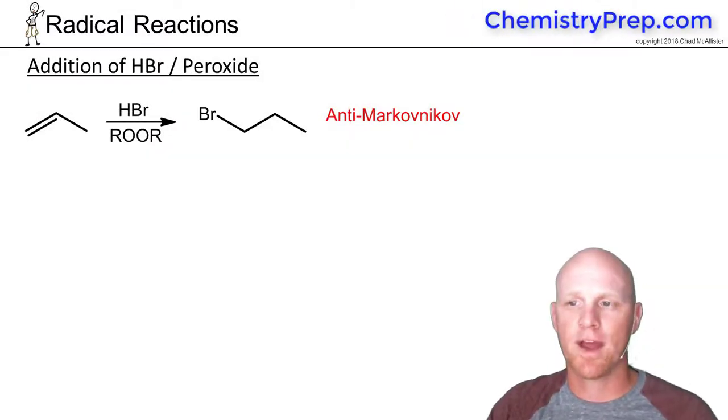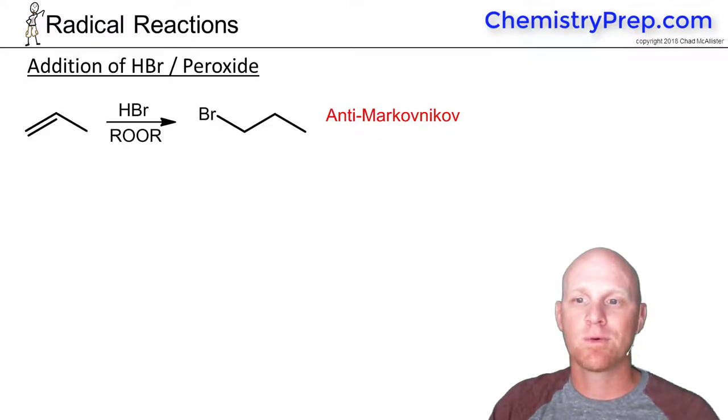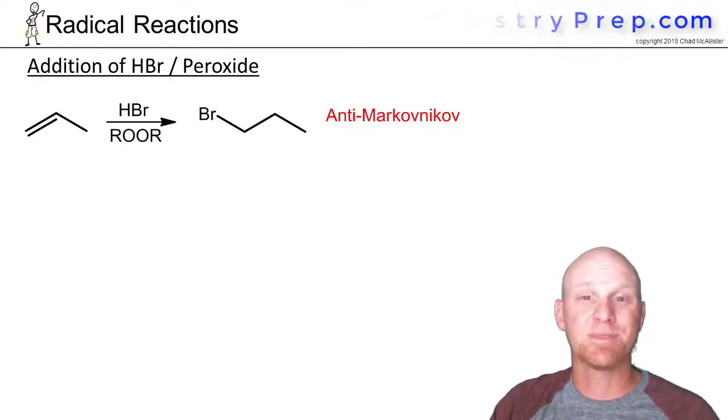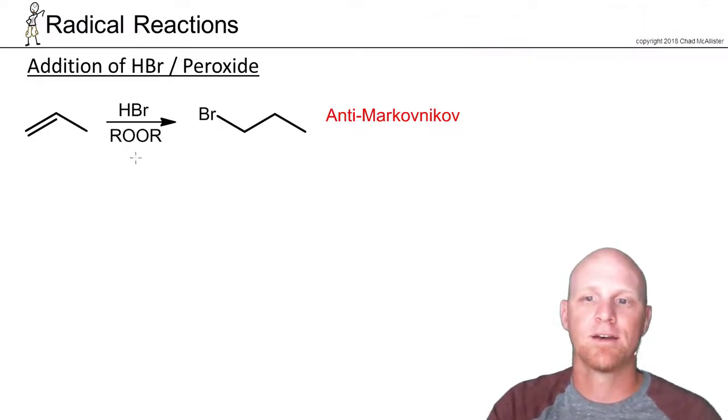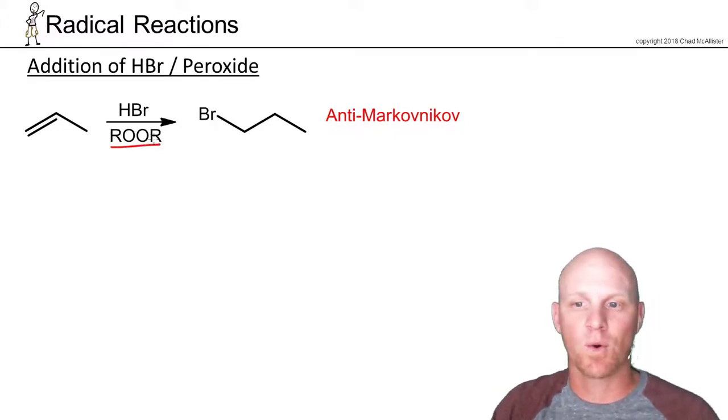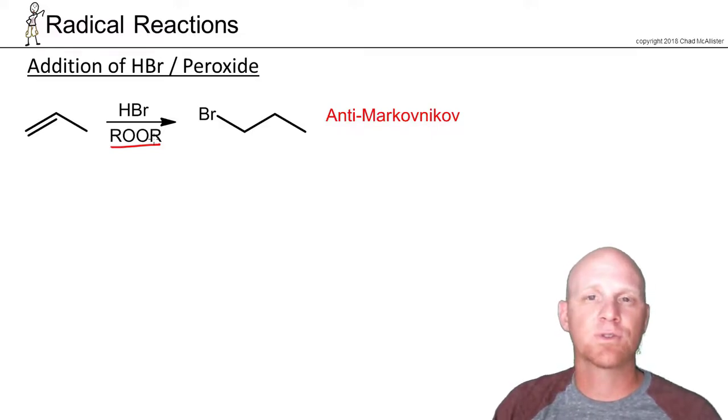So now we want to revisit a reaction we looked at earlier in the semester. That was the anti-Markovnikov addition of HBr when it's added with a peroxide. So here, R-O-O-R, kind of being the generic symbol for any organic peroxide. And in this case, it goes anti-Markovnikov, which was very different than the normal addition of HBr, which goes Markovnikov.